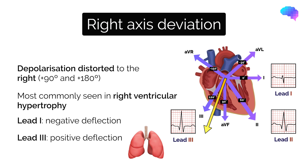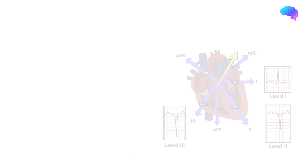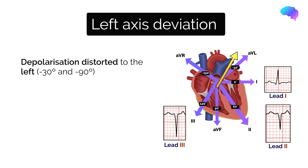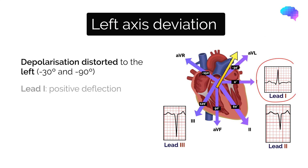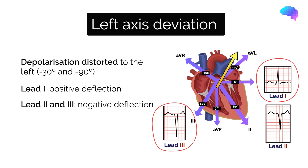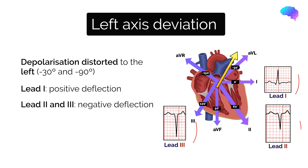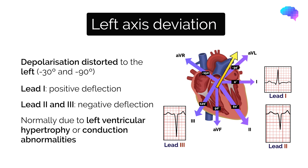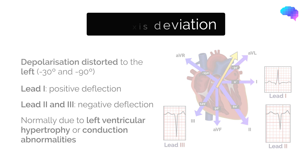Right axis deviation can, however, be a normal finding in very tall individuals. Left axis deviation involves the direction of depolarisation being distorted to the left, meaning the electrical signal travels between minus 30 degrees and minus 90 degrees. Lead 1 becomes positive, whilst in lead 3 there is a negative deflection. This is only considered significant if the deflection of lead 2 also becomes negative. Left axis deviation is usually caused by left ventricular hypertrophy or conduction abnormalities.